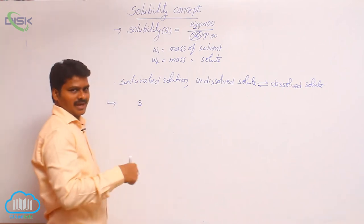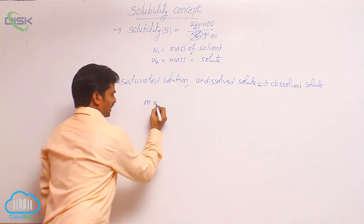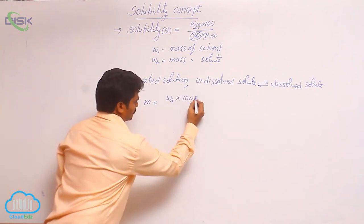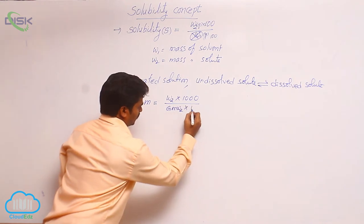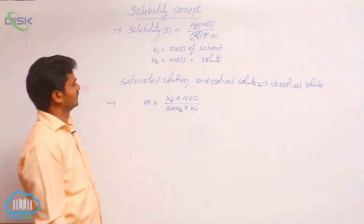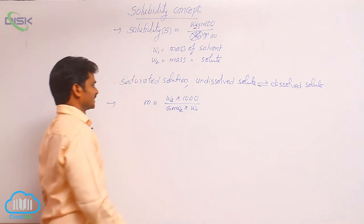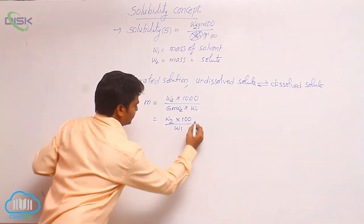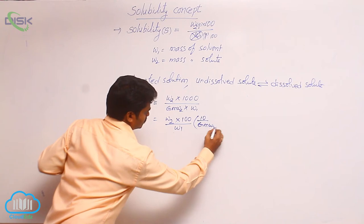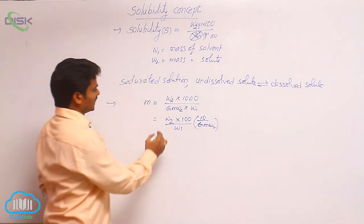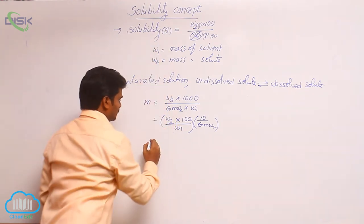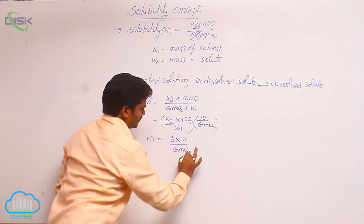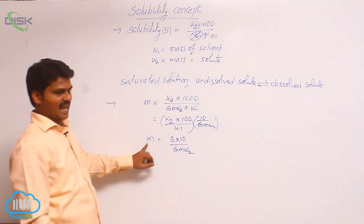Solubility S is related to molality. We can derive it from the formula of molality: m = W₂ × 1000 / (M₂ × W₁). Rearranging gives m = (W₂ × 100 / W₁) × (10 / M₂). The term W₂ × 100 / W₁ is nothing but solubility. So molality = solubility × 10 / M₂, the gram molecular weight of solute.